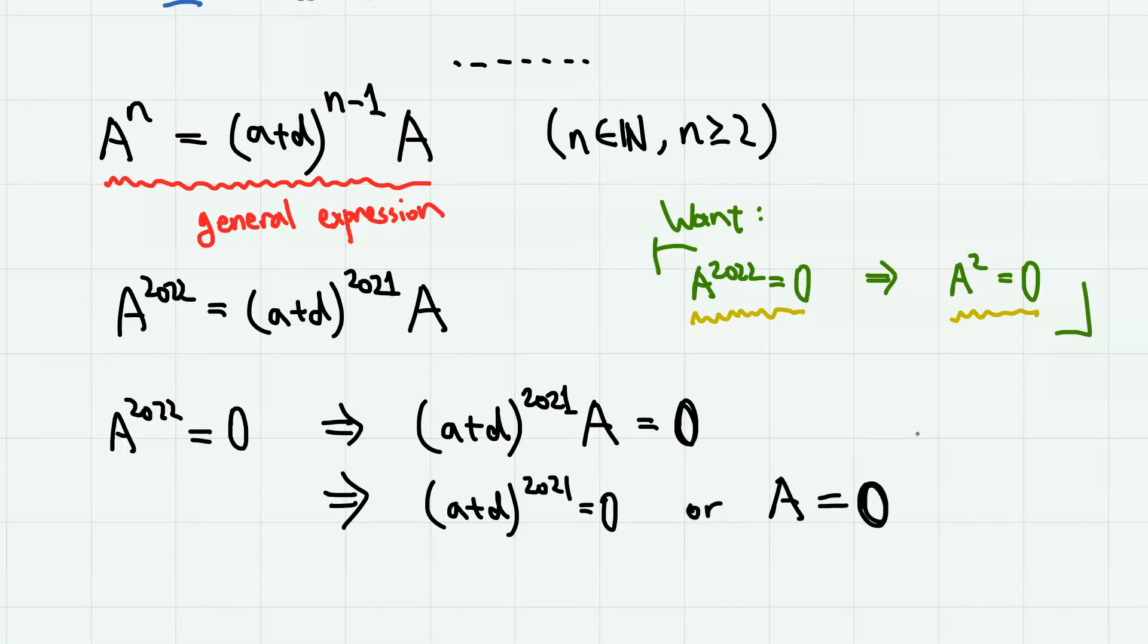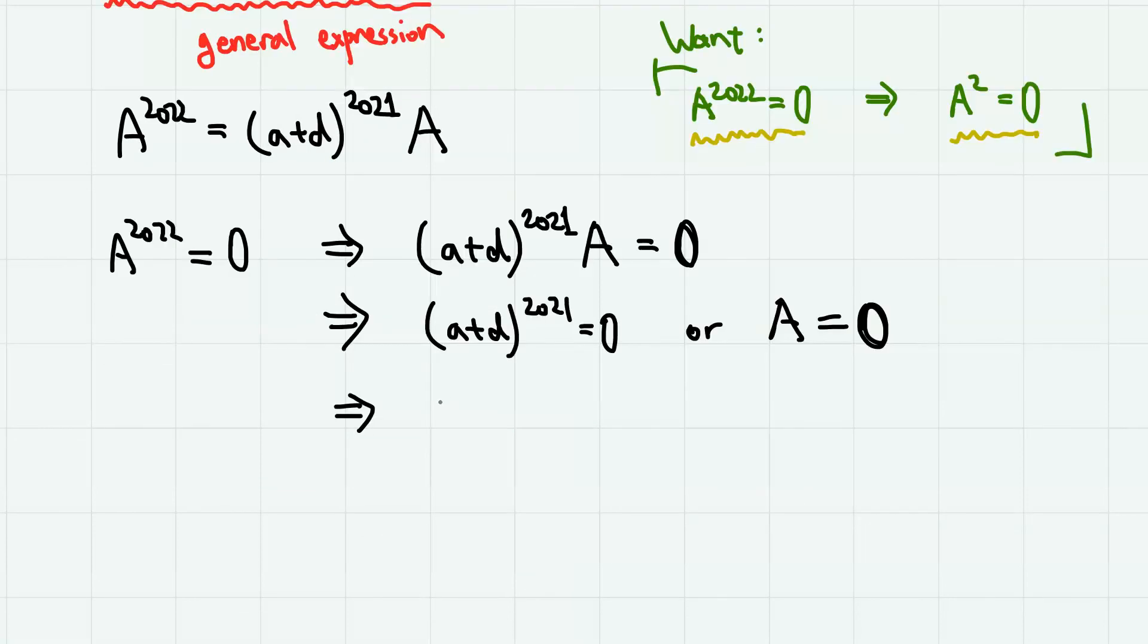or matrix A is 0 matrix, which means that either A plus D equals 0, or matrix A equals 0.